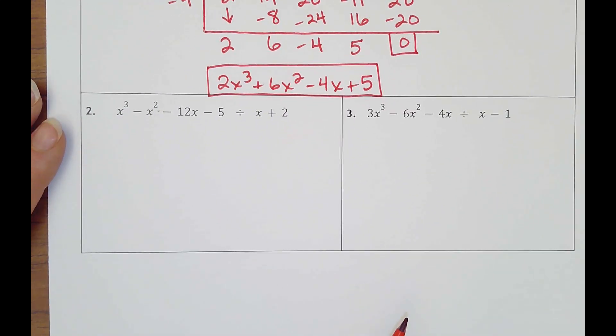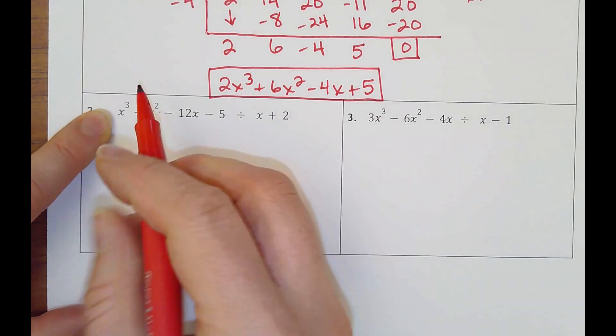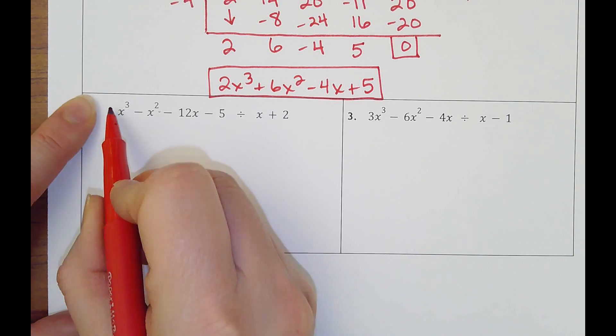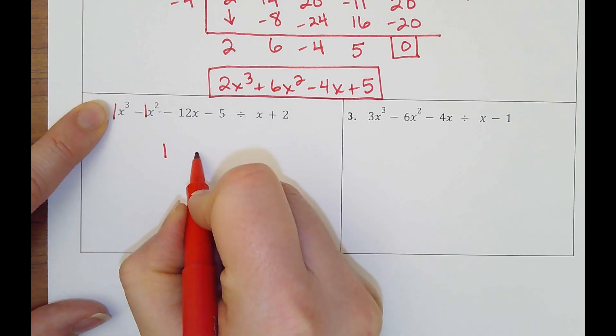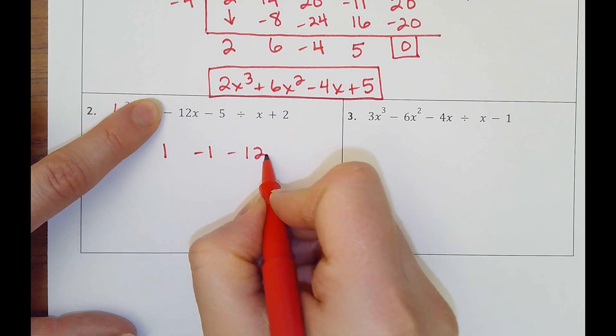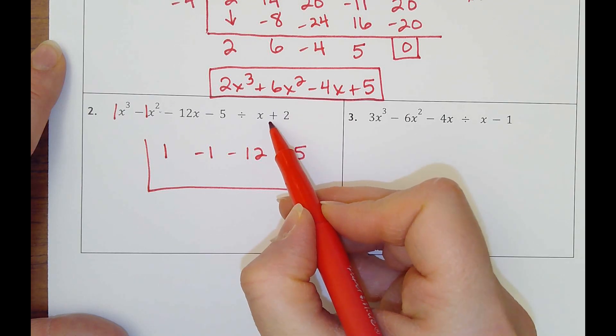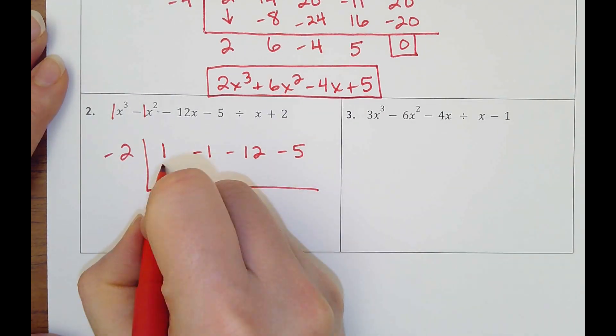Number two, we're dividing x cubed minus x squared minus 12x minus 5 by x plus 2. So go ahead and take all the coefficients - if you don't see a number there's a 1, so that'd be 1, negative 1, negative 12, negative 5. Draw your big L. The answer to x plus 2 is negative 2.